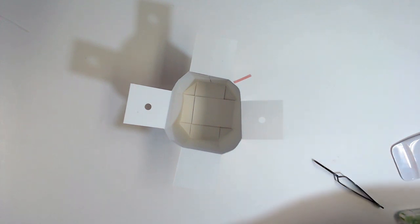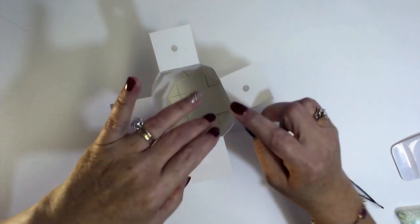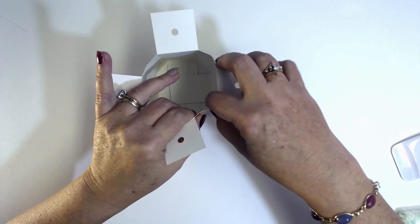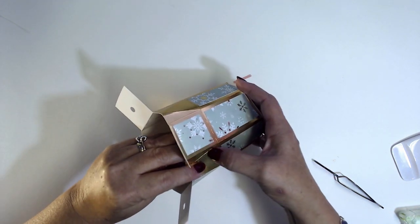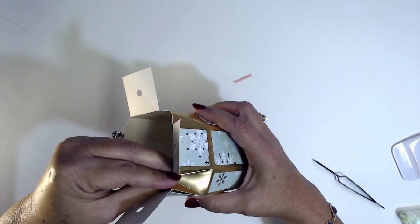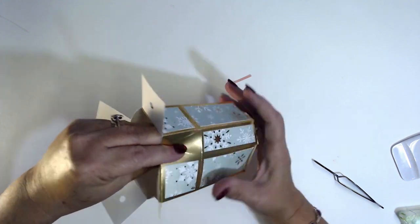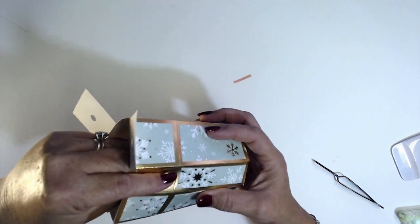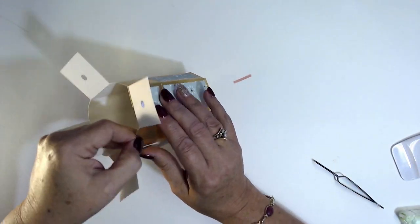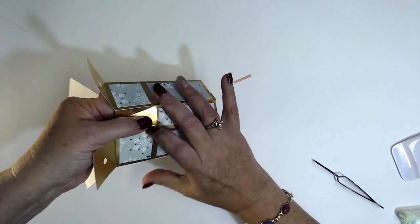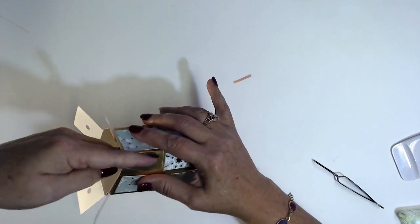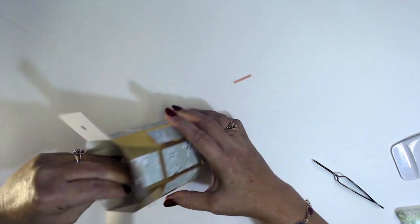Okay so the box still looks a little funky and that's okay. We're going to take these corners now and we're going to push them in even though we folded it the wrong way, we're going to kind of pinch them in like this, just like that. All four of them, pinch them in.